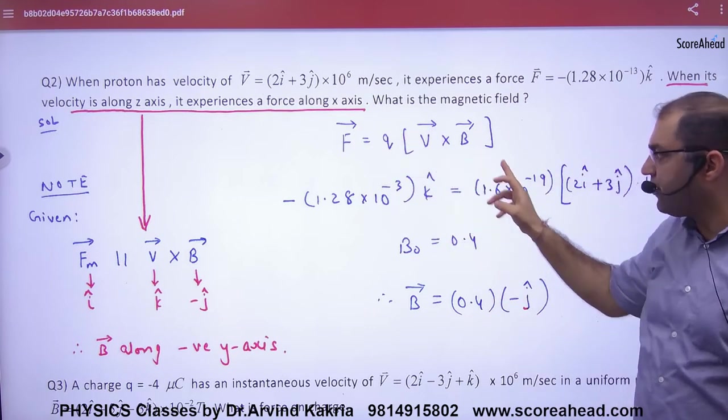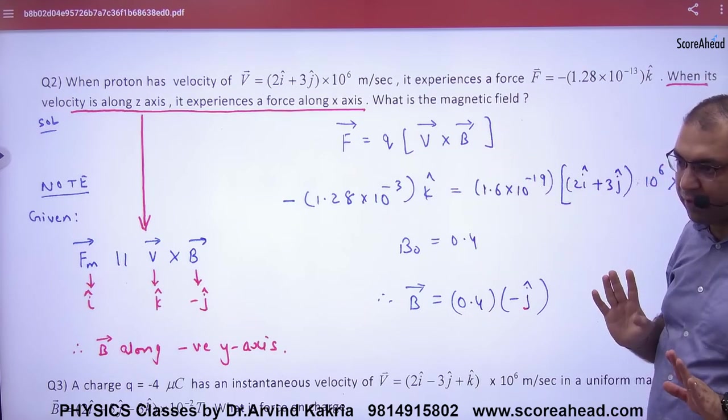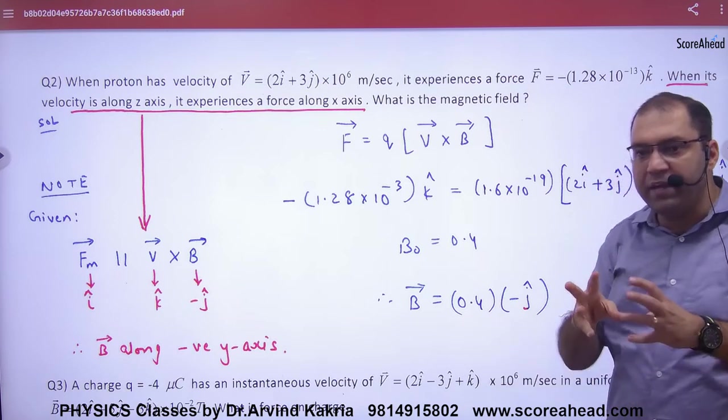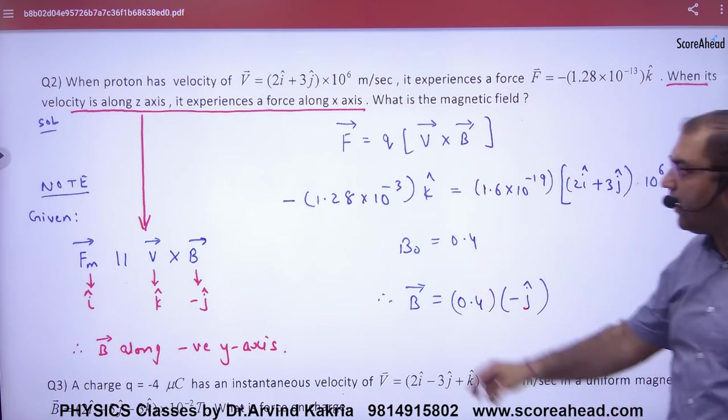This is given, charge is given. Velocity vector is given. What will we take out? B will take out. So, B vector will take out. Now, B vector's magnitude is B₀. But, how do I know that B's direction is minus J cap? This is not given. It is given. There is a line.